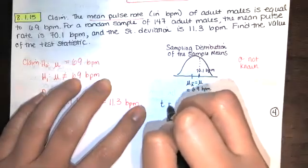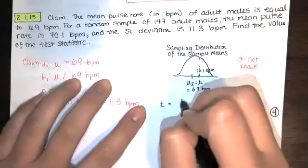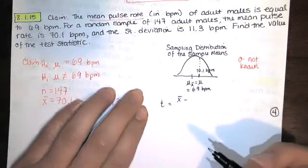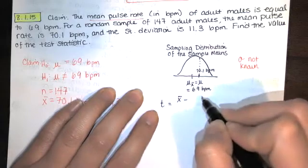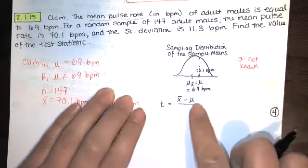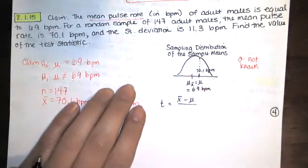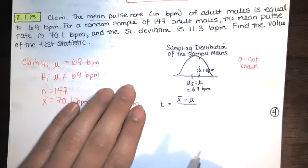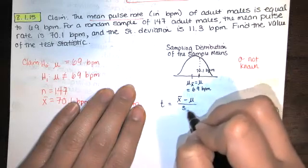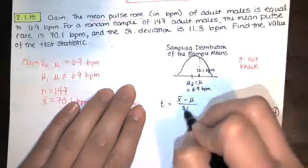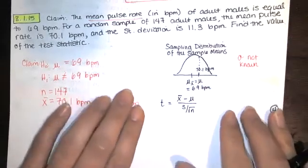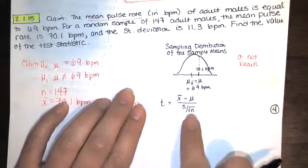And the t value is going to equal the sample mean minus the mean of the sample means that we're testing against. So we're going to use that assumed mean in our sampling distribution of sample means. And then we'll divide by the standard deviation associated with that t-distribution, which is the sample standard deviation s divided by the square root of n. That's just an estimate of that. So we're going to compute this now.